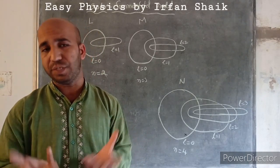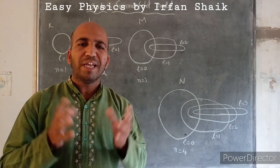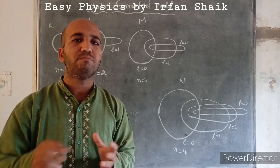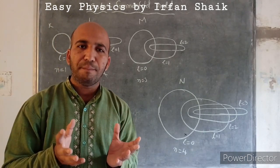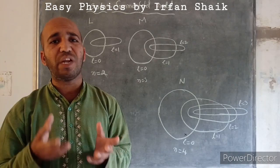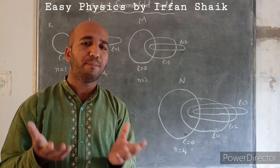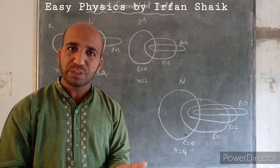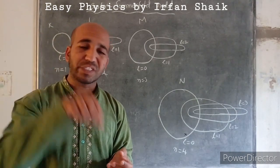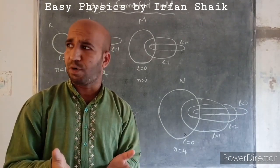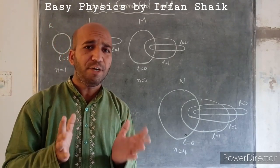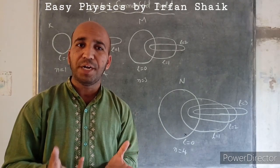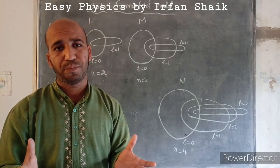What does quantum theory say? Before this, electrons were described as revolving around the nucleus in fixed orbits. But can we find the position or velocity of an electron? It is very difficult because the atom is the smallest particle — we cannot even see atoms, and electrons are subatomic particles inside the atom. It is very difficult to identify the position of an electron.